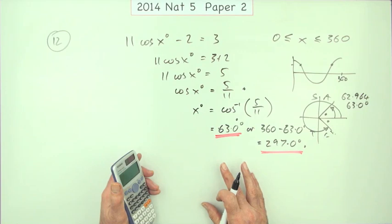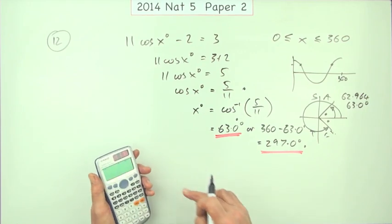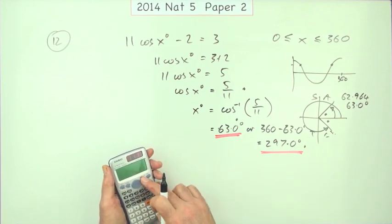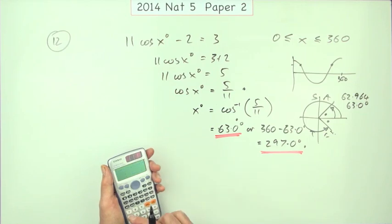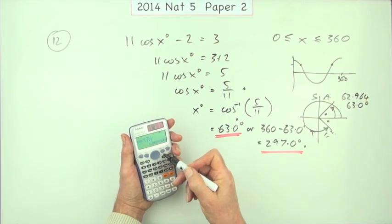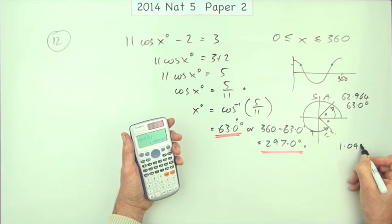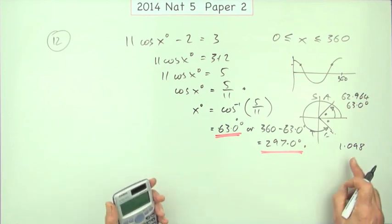Now looking at the marking scheme, it's actually been very generous in this question. If you accidentally had that set in the wrong setting, so that if instead of it being in degrees you set it into radians and then did that and press the button you would get 1.0898. You'll still get the mark.